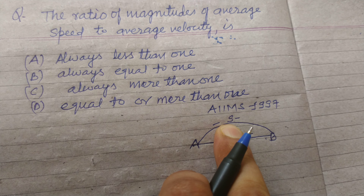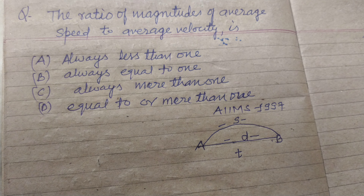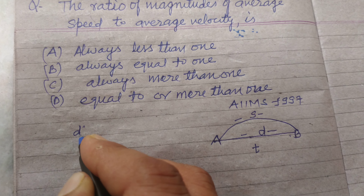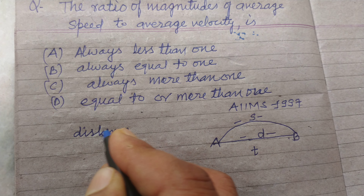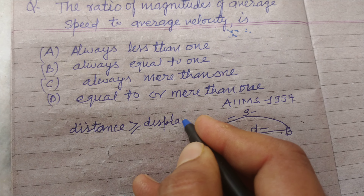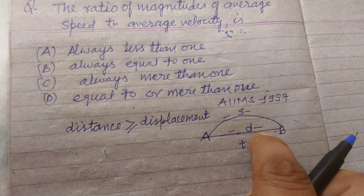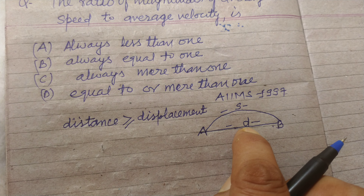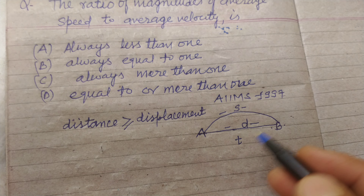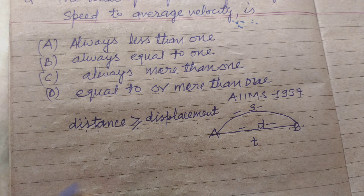The other path length is called distance. So S is distance and D is displacement, and time T is taken to cover this distance. Distance is greater than or equal to displacement, because displacement is the shortest distance from one point to another, and distance is greater than displacement or can be equal if the particle is going directly from A to B. So the relation is: distance is greater than or equal to displacement.